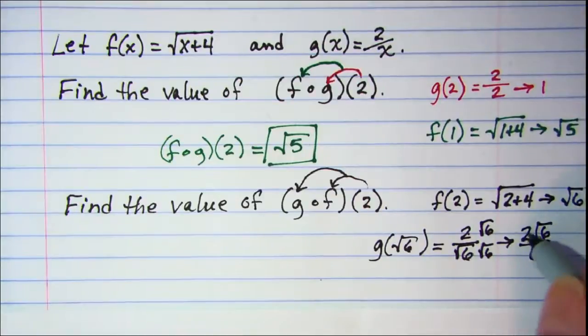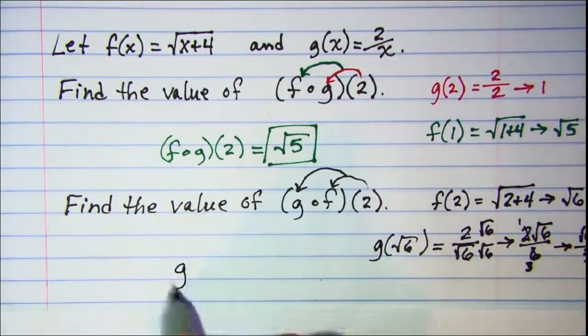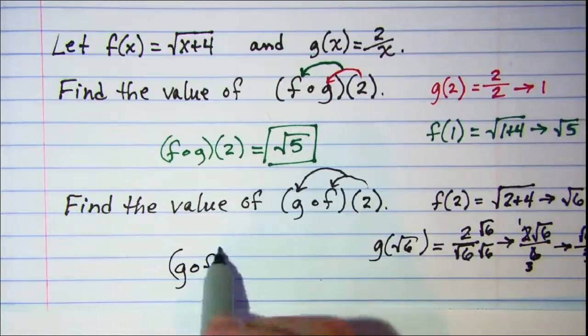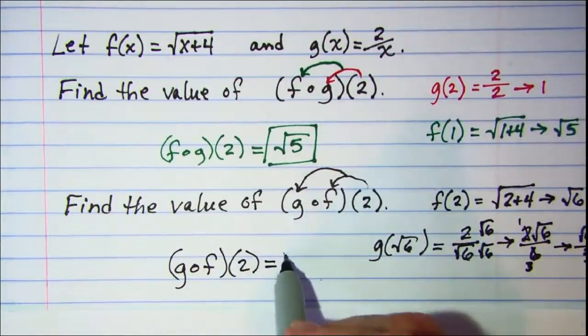And finally we can simplify here. 2 divides both of these, so this value is √6/3. So our g∘f(2) is √6/3.